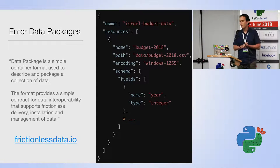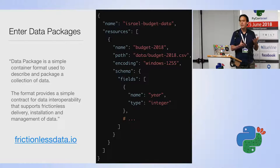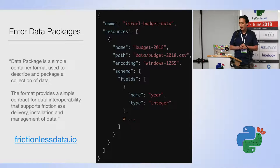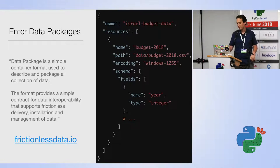The data should be tidy, and here we use a standard called Data Packages — a really cool way of packaging data in CSV files but with documentation that makes it reusable across various platforms and languages. You can read more at frictionlessdata.io. The quote: 'Data Package is a simple container format used to describe and package a collection of data. It provides a simple contract for data interoperability that supports frictionless delivery, installation, and management of data.'